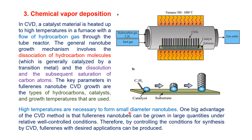High temperatures are necessary to form small-diameter nanotubes. One major advantage of the chemical vapor deposition method is that fullerene nanotubes can be grown in large quantities under relatively well-controlled conditions. Therefore, by controlling the conditions for CVD synthesis, fullerenes with desired applications can be produced.